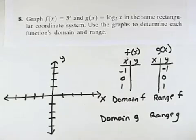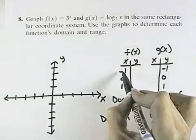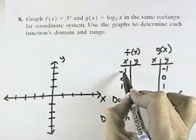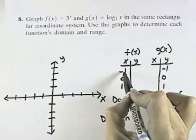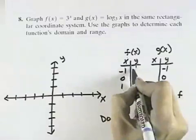For f(x) = 3^x, I can substitute values for x to find three points to plot. When x = -1, I have 3^(-1), which equals 1/3.